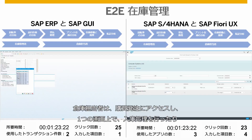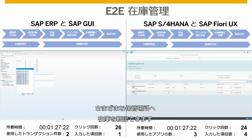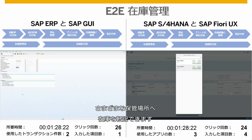When accessing the purchasing order, the warehouse clerk can post goods receipt for the PO from different storage locations all on one screen.